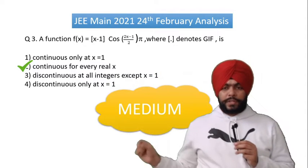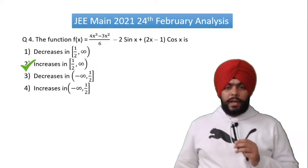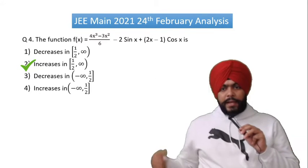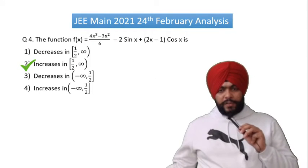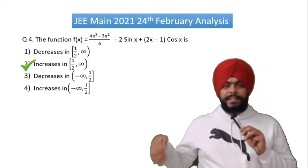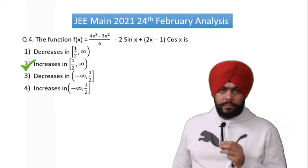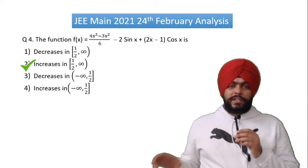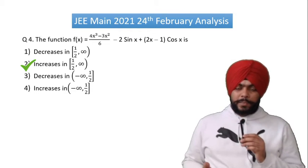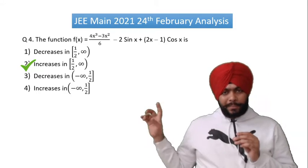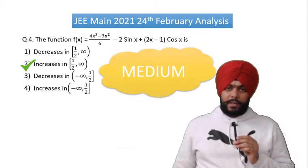Question number 4 involves a polynomial function and a trigonometric function — you have to find the increasing and decreasing nature. Because there are two functions mixed together, if there were just one function it would be easy. With both mixed, it comes to medium level.